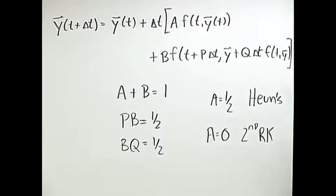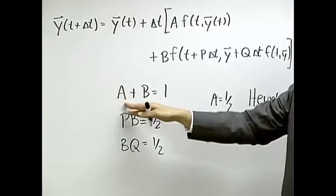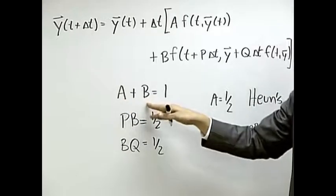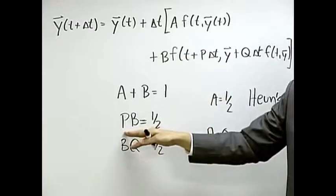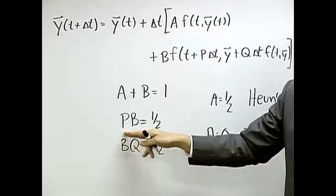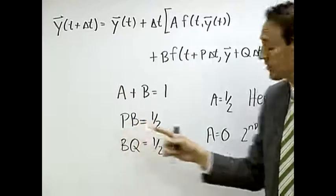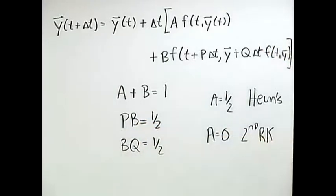By the way, you can prove that. Go back now to A equals zero. If A equals zero, B is one, so everything's weighted here. If B is one, P is a half, so P tells you where you're going to evaluate it.